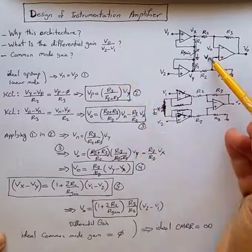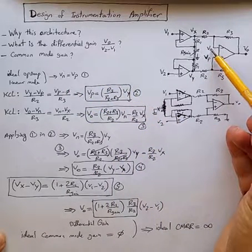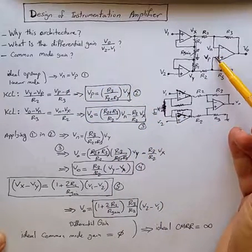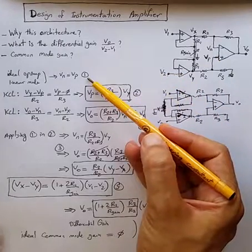So that's why we have Vn equal to Vp, the voltages of inverting and non-inverting terminals. That's equation one.